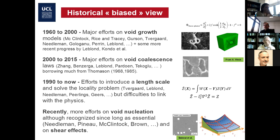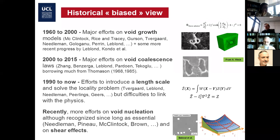About 20 years ago, people realized there was a renewed interest in looking at the final step — when the voids are big enough to interact, the growth process accelerates. This is called void coalescence: when plastic deformation stops being homogeneously distributed around the voids and instead localizes in the ligament between the voids — in terms of internal necking or a small shear band between the voids. People realized this is really the initiation of the fracture process, and so it is very important to have dedicated models to predict it.